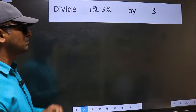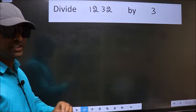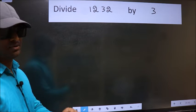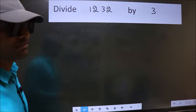Divide 1,232 by 3. While doing this division, many do this mistake. What is the mistake that they do? I will let you know. But before that, we should frame it in this way.